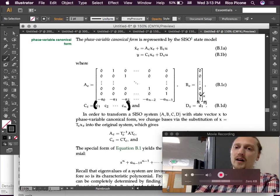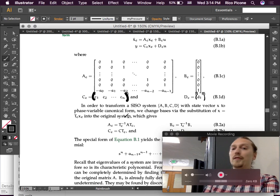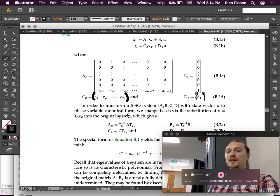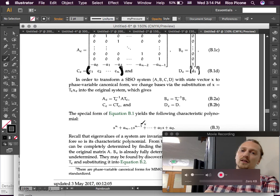And also, the B matrix can be transformed to be all zeros except for a one at the very bottom. And the D matrix and the C matrix are just whatever they end up being in this transformation. So, in order to transform a single-input, single-output system A, B, C, D, with state vector X to phase variable canonical form, we change basis via the substitution X equals TC XC into the original system.